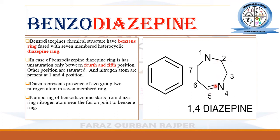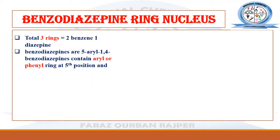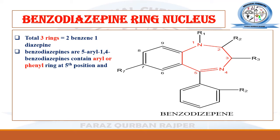The unsaturation is present only between the fourth and fifth carbon atom. Benzodiazepines contain three rings: one benzene ring and one diazepine ring fused together. This benzene ring is combined with the seven-membered heterocyclic diazepine ring. At the fifth position, you find the presence of an aryl or phenyl ring.